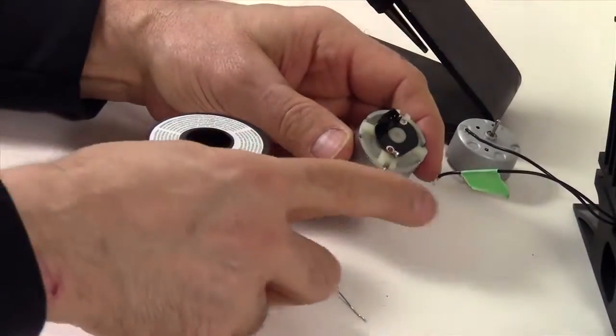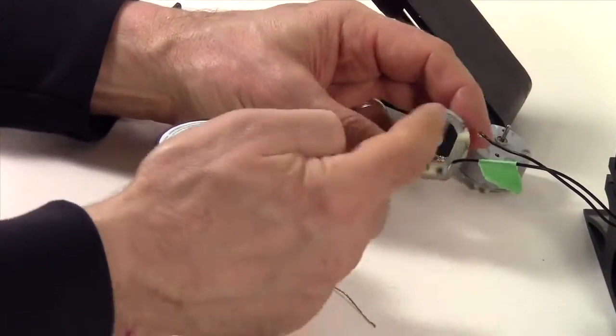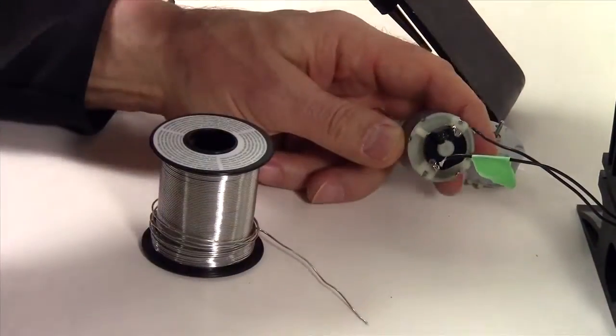So what we're going to do is solder the wire with the green tape onto that terminal. And this wire gets soldered onto that terminal.